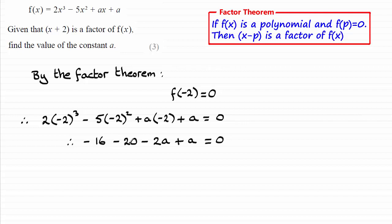Group together the constants and the terms in a, and we end up with minus 36 minus a equals 0. And if we add a to both sides, we end up with a equaling negative 36. OK?